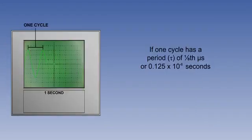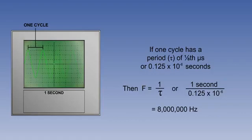If a radio wave takes one eighth of a microsecond to complete one cycle, that is 0.125 of a microsecond, we can see that it has a frequency of 8 million cycles per second, or 8 million hertz.